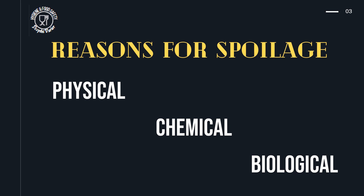Now there are three main reasons for spoilage: physical, chemical, and biological. Physical reasons are more related to the temperature, humidity, or any kind of injury caused to the food. Chemical reasons are due to the chemicals present in food — introduced from outside or due to the food's own internal chemicals. Biological factors or reasons for spoilage can be either intrinsic, because they are already present in the food, or they may come from outside. Let's look at each one of these in detail.